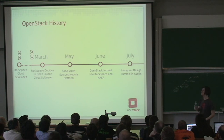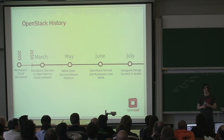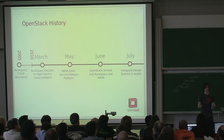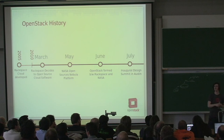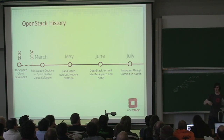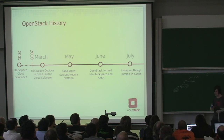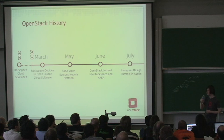Eventually, someone at Rackspace called up NASA saying: we've got this cool new object store we just finished writing and want to open source; you've got this other thing we also want to use — how about we put the two together, call it a cloud computing platform, and work together? And they were up for it. That was pretty cool.